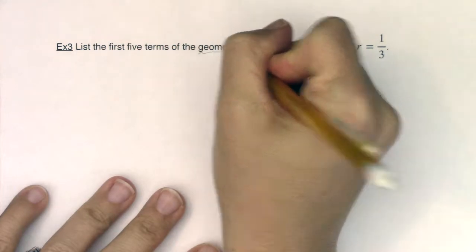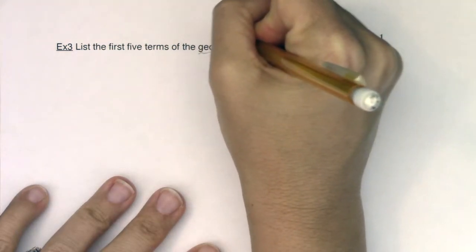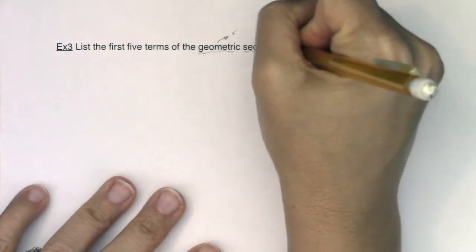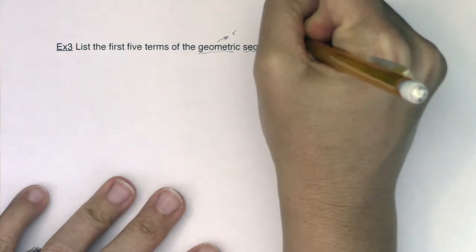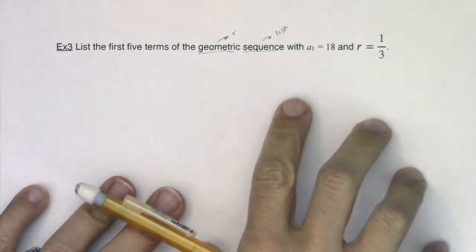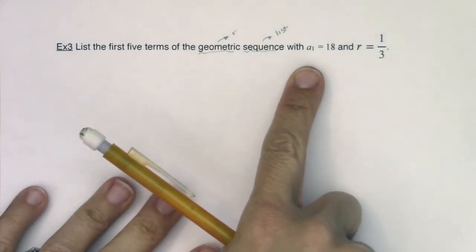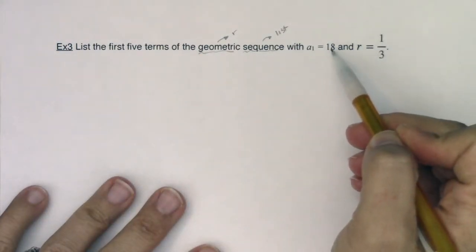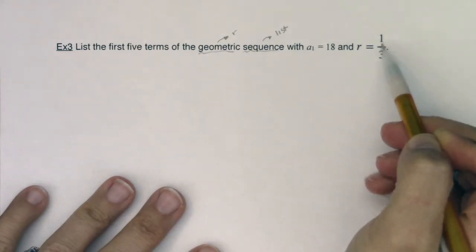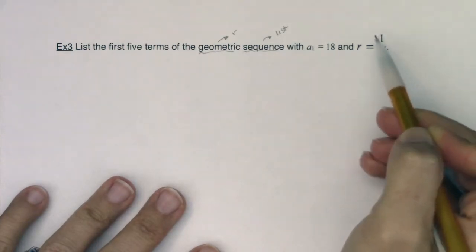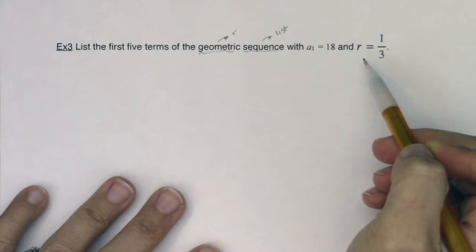Alright, so I hear geometric and I think r, I hear sequence and I think list. So I'm going to make a list of numbers. They want the first five terms. They gave me the first one and they're saying basically to get from one term to each of the successive terms, multiply by 1/3. That's what the common ratio is.